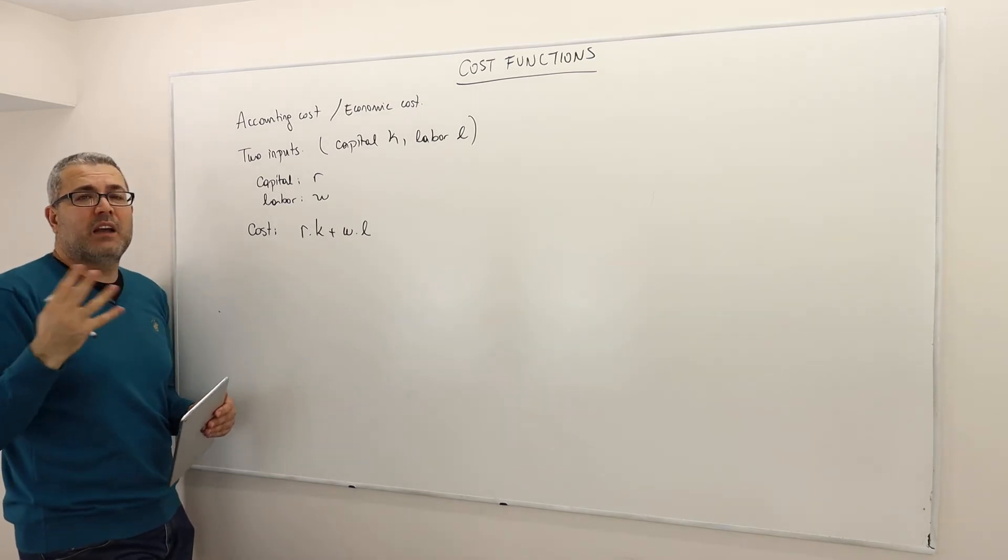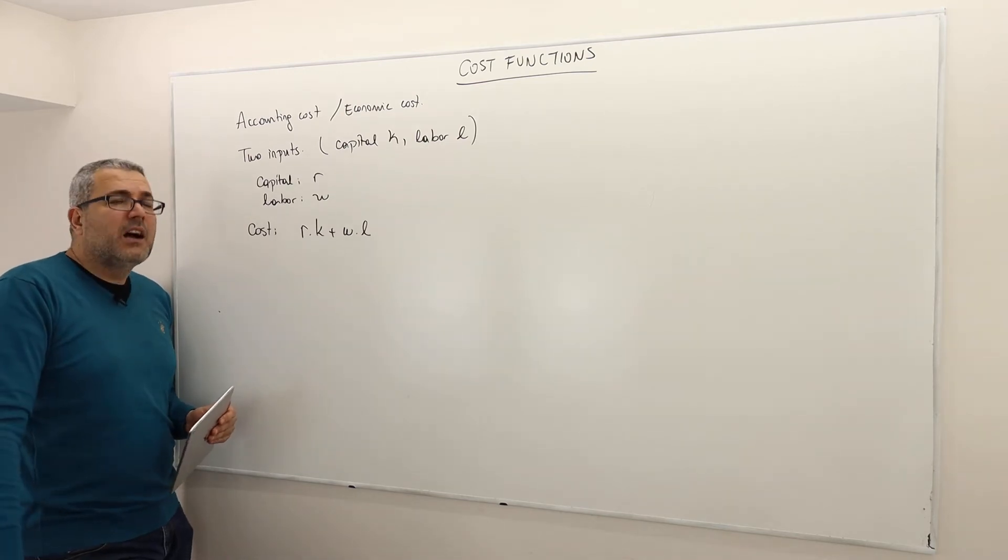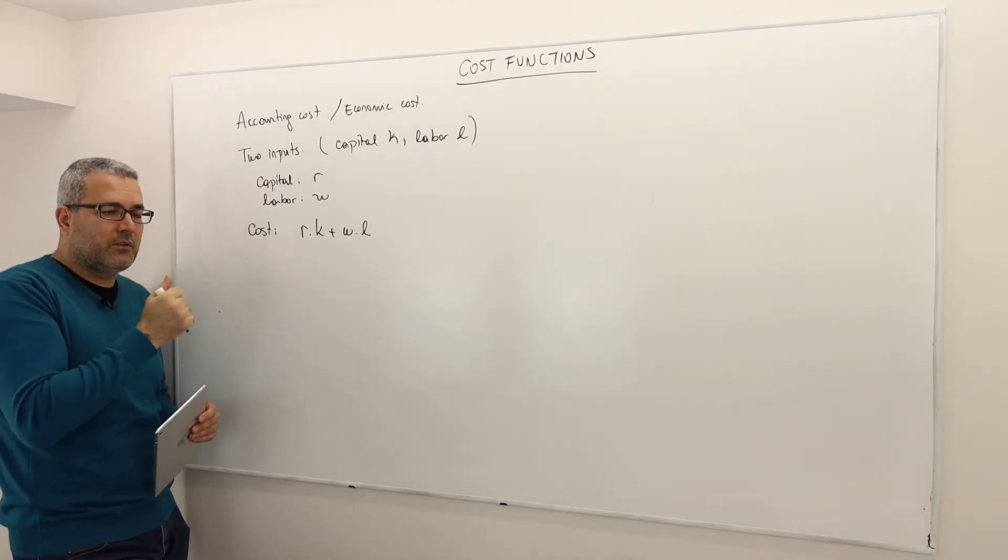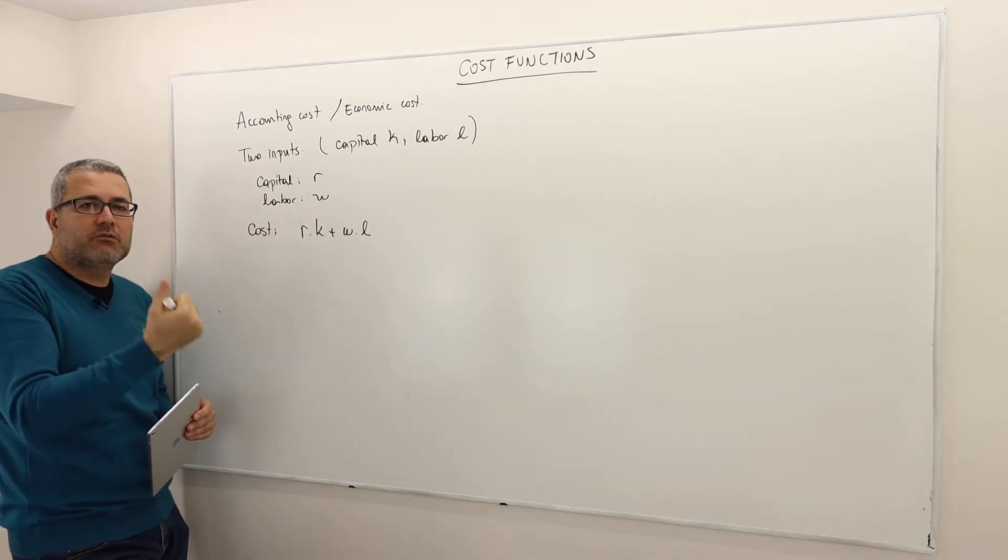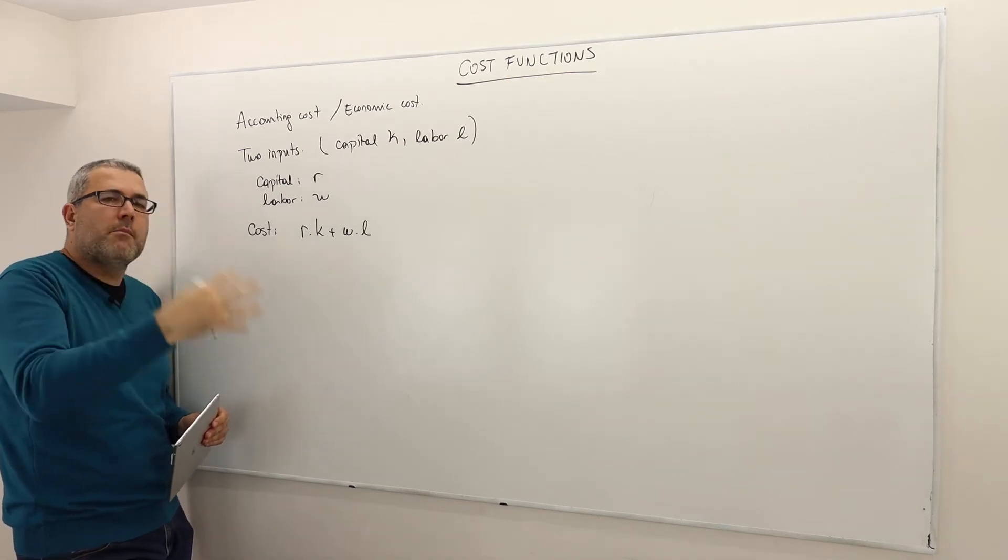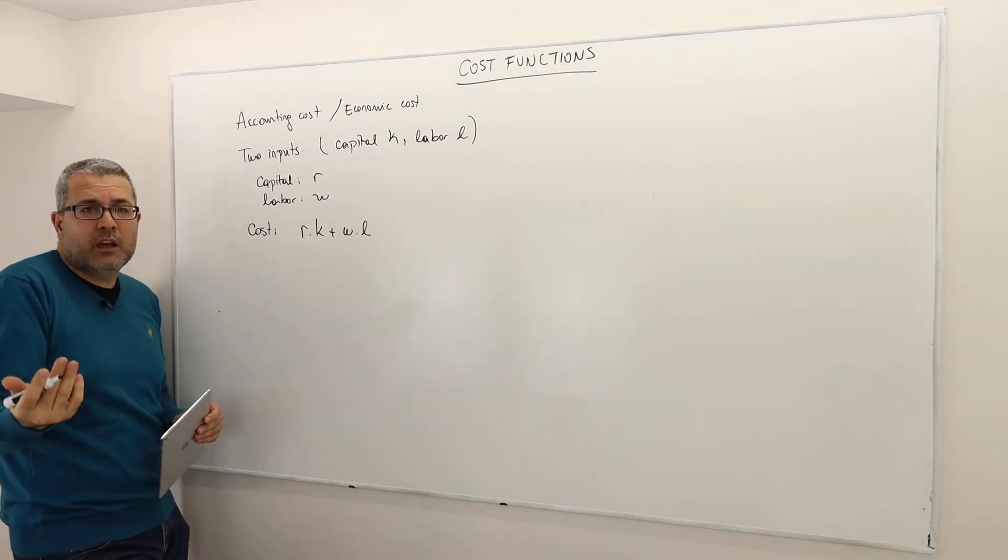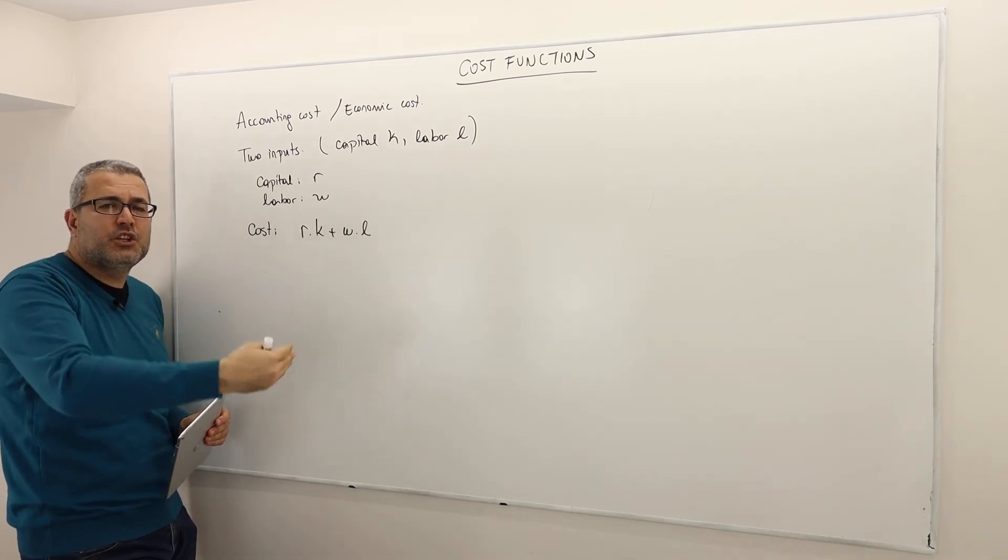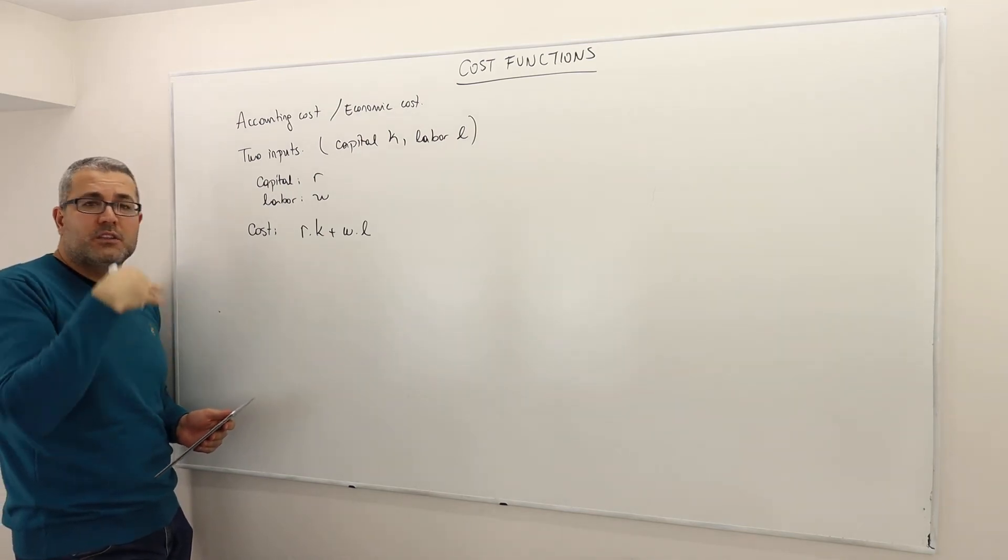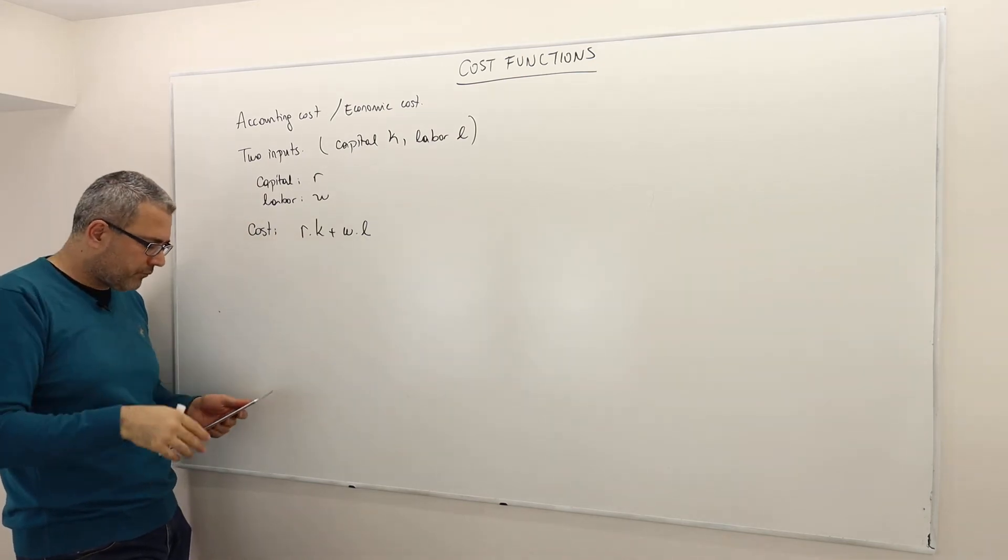If you hire L units of labor times W plus K units of capital times R, this is going to be your total cost. There's also this idea of fixed costs. For example, if you are an R&D company, it's not just labor or capital, but you need to spend some amount of time to build or generate the product. And once you come up with the idea—for example, if it's a software, the production of additional CDs is very negligible. So there's also this idea of fixed costs, sunk costs. They're not included here. We're talking about variable costs.